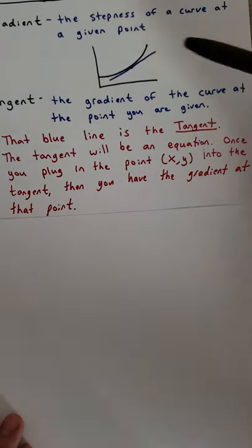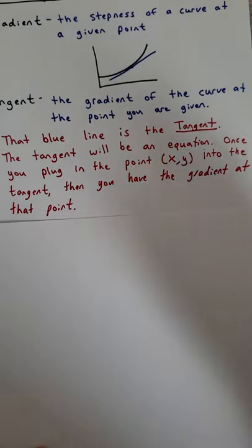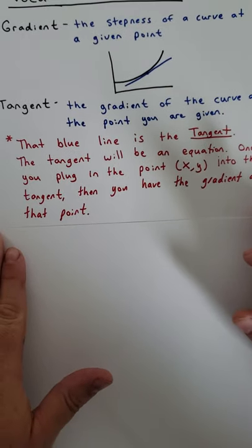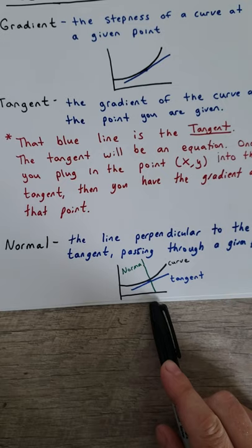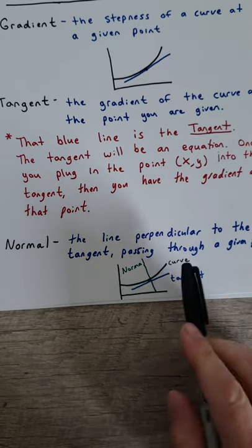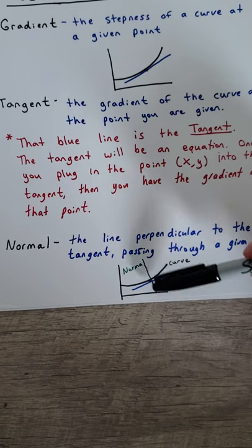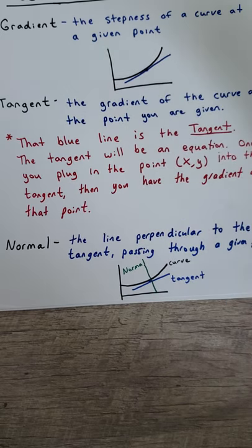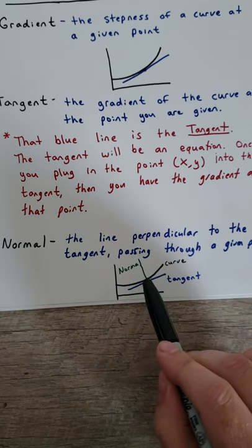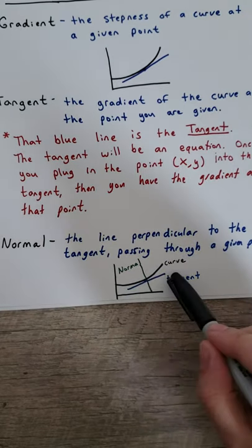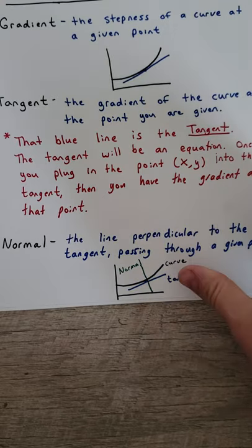Once you plug in the point you are looking at into the tangent equation, you will have the gradient at that point. So the gradient is going to be a value — a number — while the tangent is an actual expression. Then we have what's called the normal. The normal is the line that is perpendicular to the tangent that passes through that same point — it's 90 degrees. So if you're asked to find the equation of the normal, you'd find the tangent and use the opposite inverse slope.